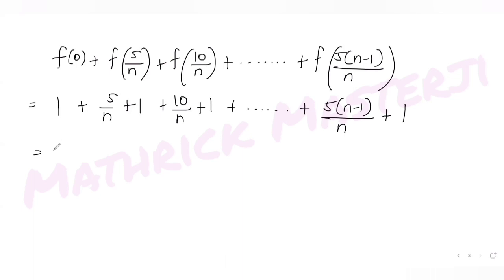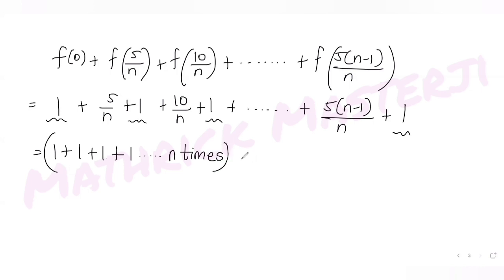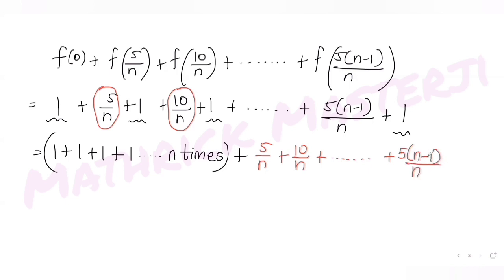What is happening is that you are adding 1 in every term. The last term has n minus 1 as a multiple of 5, starting from 5 times 1, so there are n minus 1 such terms plus the first term, giving n terms total. So that 1 is being added n times. Apart from that, from the second term onwards we have the ratios 5 over n, 10 over n, 15 over n, and so on till 5 times n minus 1 over n.